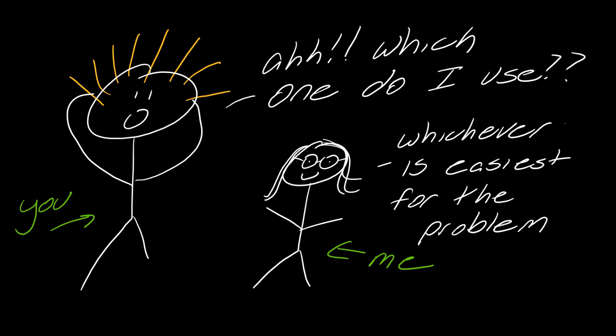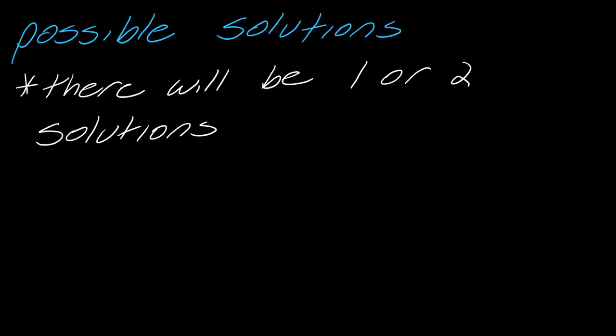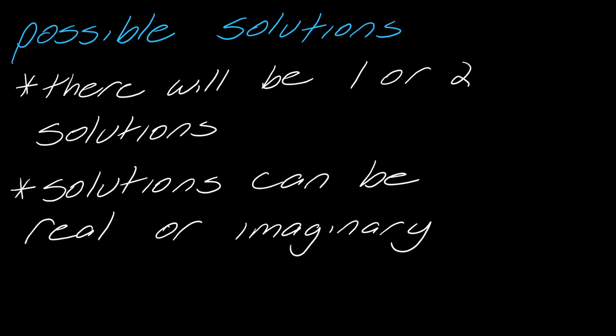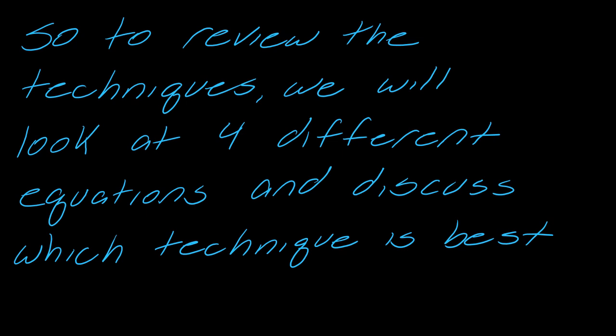We will take a look at which technique to use in this video. As a reminder, as far as possible solutions go, you're going to have one or two solutions. If you have one solution, what will happen is that solution repeats itself — so you could have the same solution twice or two different solutions. Your solutions can be either real or imaginary numbers. To review the techniques, we will look at four different equations and discuss which technique is best.